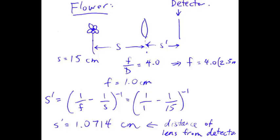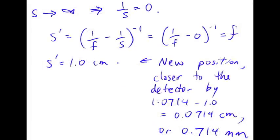Now let's look at the landscape. In the case of the landscape, the object distance approaches infinity. That means 1 over the object distance equals 0, and that term vanishes from the thin lens equation. So S prime equals the inverse of 1 over F minus 0, which just equals F. The image distance equals the focal length when the object is at infinity — the rays are parallel and the image forms right at the focal point. So S prime equals exactly 1 centimeter.